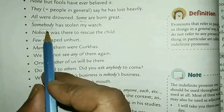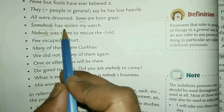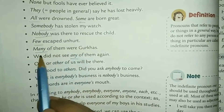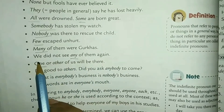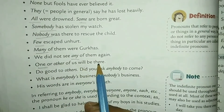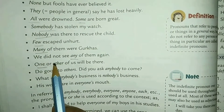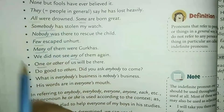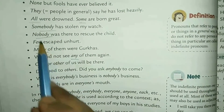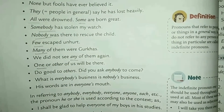Here are more examples. 'All were drawn.' 'Some are born great.' 'Somebody has stolen my watch.' 'Nobody was there to rescue the child.' 'Few escaped unhurt.' 'Many of them were Gurkhas.' 'We did not see any of them again.' 'One or other of us will be there.' The underlined words are indefinite pronouns because they are not referring to any particular person — all these persons are unknown. And these are not adjectives because there is no noun after them.